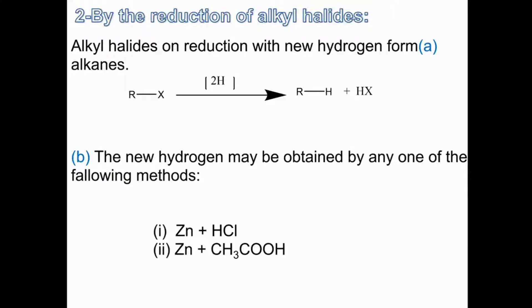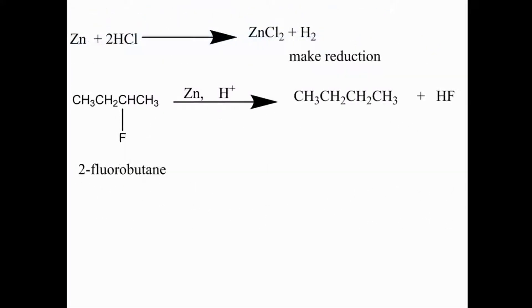Zinc plus HCl or zinc plus acetic acid can be used. If you react zinc and HCl, you get zinc chloride plus H2 — that is nascent hydrogen for macro reduction. For example, if you take the alkyl halide 2-fluorobutane and react it with zinc and H+, you will get alkanes. So the second method of preparation of alkanes is reduction of alkyl halides, whereas the first method was hydrogenation of alkenes and alkynes.